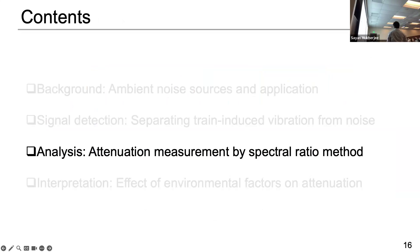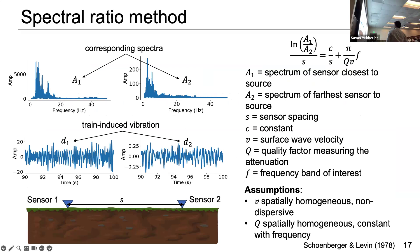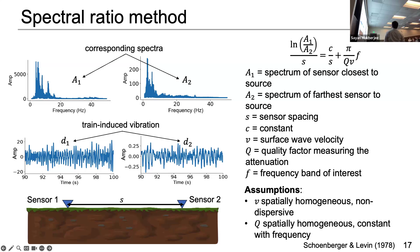The next thing is that we are trying to measure the attenuation. We are using the spectral ratio method for that. This is a two-sensor approach: the first sensor is closest to the source and sensor two has a spacing of s. Because sensor one is closest to the source, it has a higher amplitude in the spectrum than sensor two. The method is simply taking a logarithm of the amplitude ratio and dividing it by the spacing, then we set a linear equation on that basis. The slope parameter will be very important because it gives us the quality factor Q, which is the inverse of that equation.